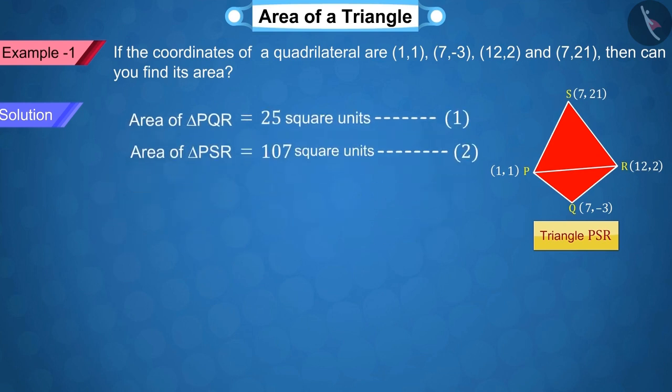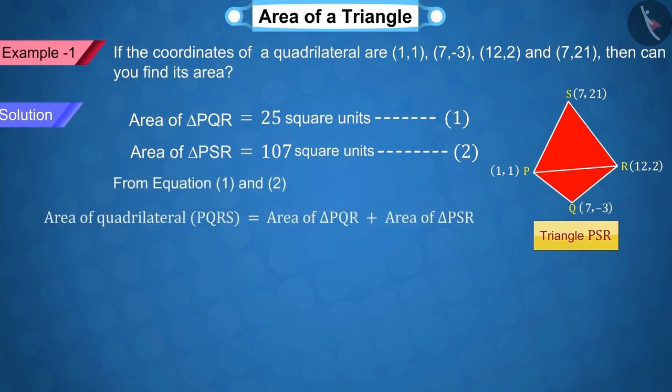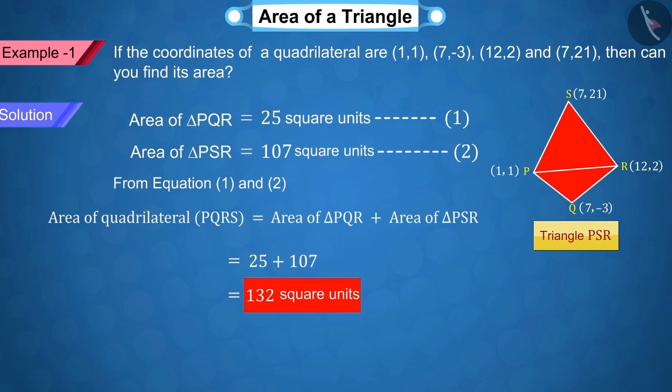Since the area of the quadrilateral is equal to the sum of the areas of these two triangles, the area of the quadrilateral is equal to 132 square units.